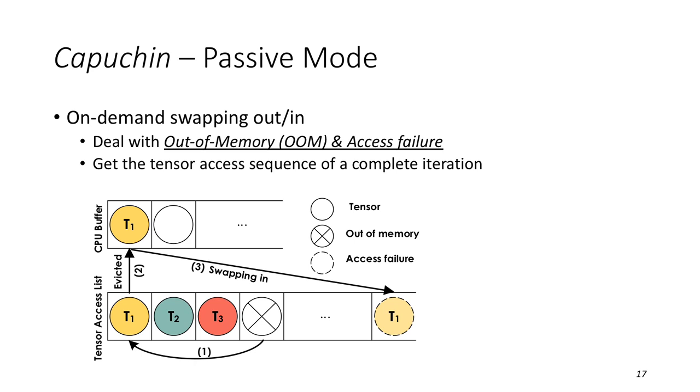When the training runs out of memory, Capuchin will work in passive mode to get rid of it. When occurring out of memory, it will trigger some tensors to be evicted out of GPU memory and their memory is copied to CPU memory. The figure T1 is evicted. When T1 is accessed again, its data is copied back to GPU. It is similar to virtual memory in the traditional operating system which performs on-demand swapping. A big difference is we will record tensor access sequence with additional information for each tensor to observe the dynamic tensor access pattern so as to guide the next iterations.